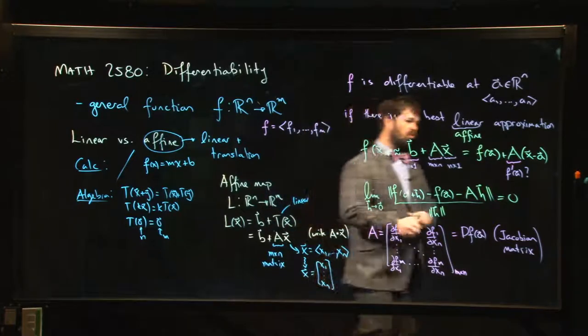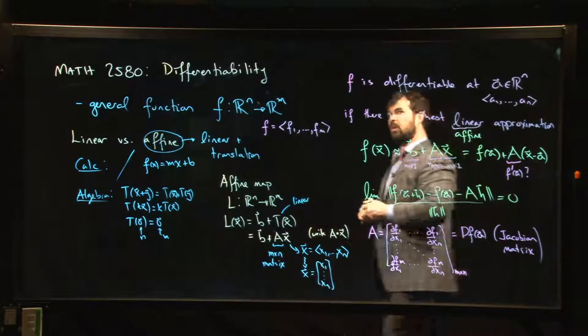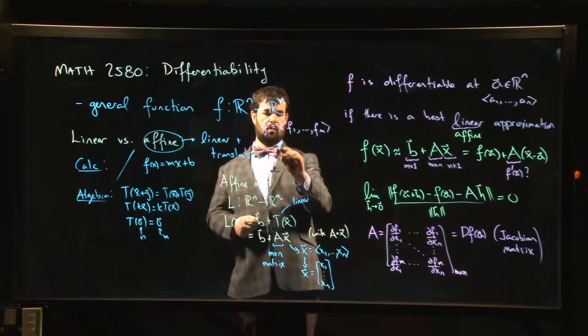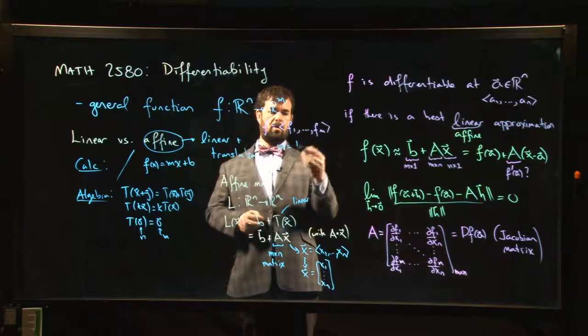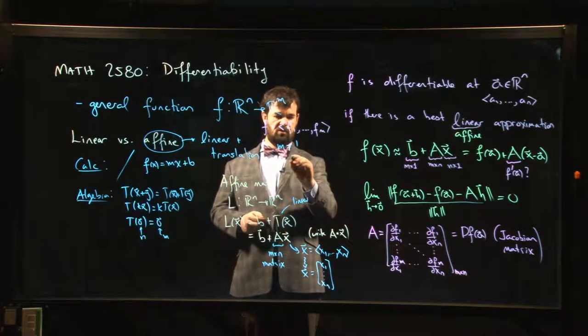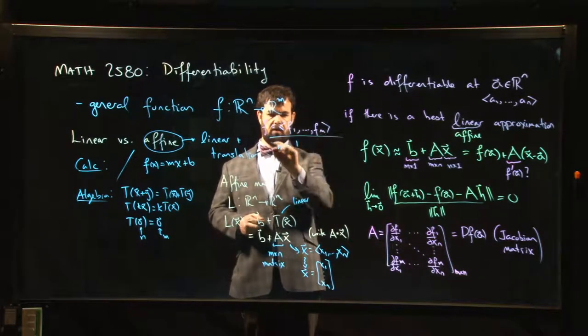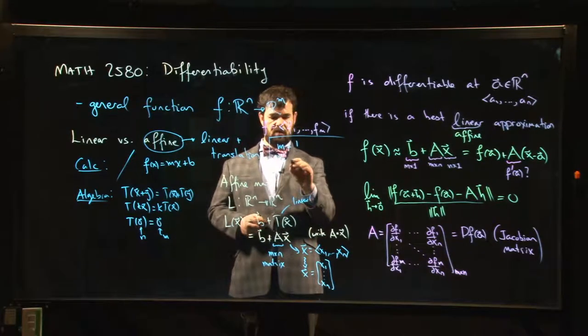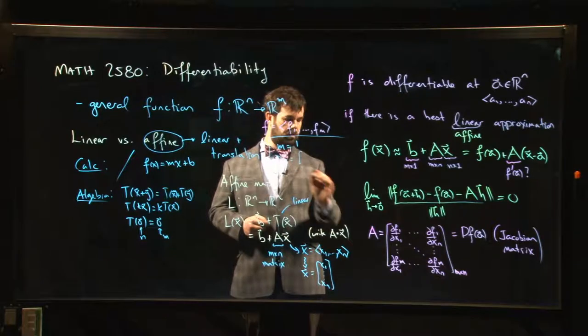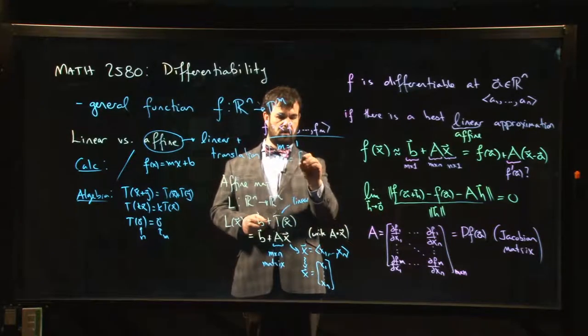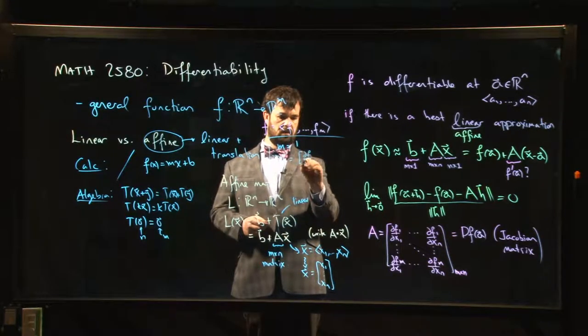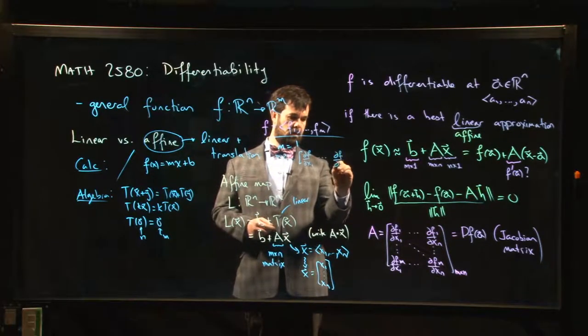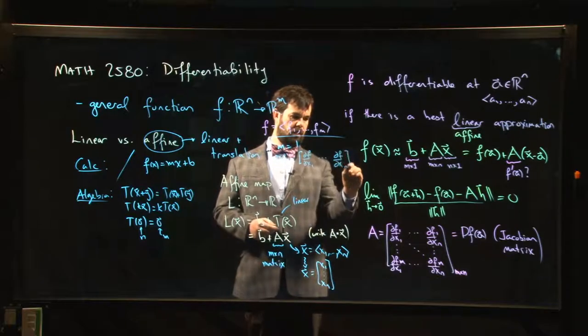And let me just mention that in closing, in the special case where m equals one—so if m equals one, then you just have a real valued function, and in that case, let me just kind of box this in—if m equals one, this derivative is going to look like, well, it's going to be a matrix with only one row, so it's just going to look like df/dx_1 over to df/dx_n.